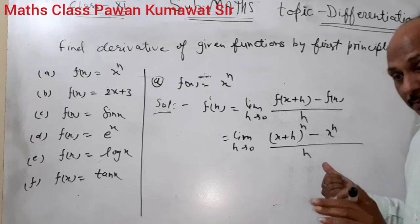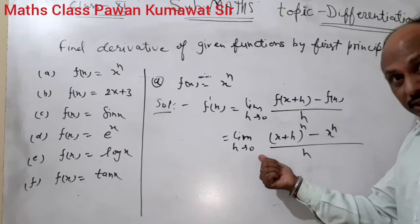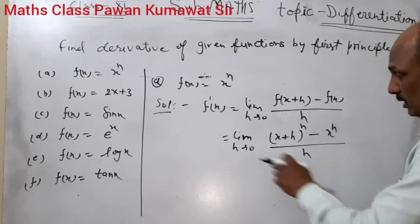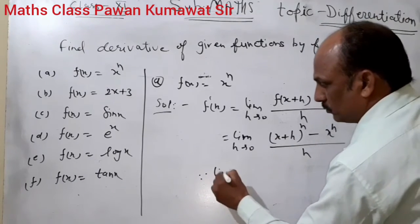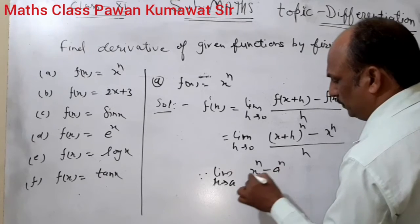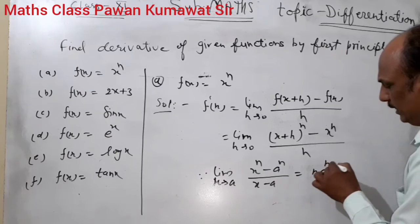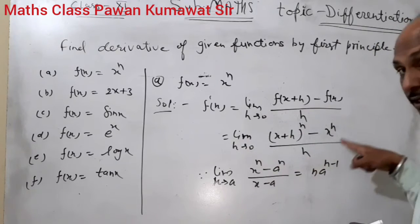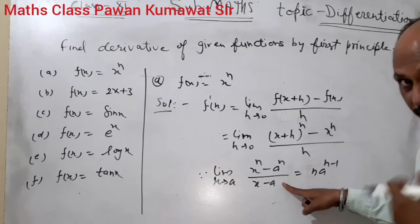In a previous lecture we discussed the limits topic, where we explained and solved these conditions. We know the limit identity: limit x→a [xⁿ − aⁿ] / (x − a) = n · aⁿ⁻¹. We want to convert our expression into this format so we can apply this identity easily.